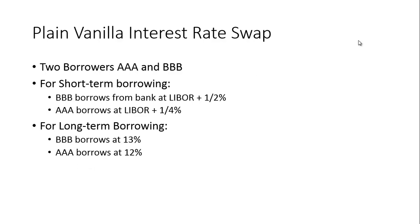Let's look at a numerical example of what's referred to as a plain vanilla interest rate swap — the simplest example you can get. Let's consider two borrowers, AAA and BBB. For short-term borrowing, BBB borrows from a bank at LIBOR plus a half a percent. LIBOR is a floating interest rate — it stands for London Interbank Offer Rate. For long-term borrowing, BBB would pay a fixed rate of 13%, and AAA would pay a fixed rate of 12%.